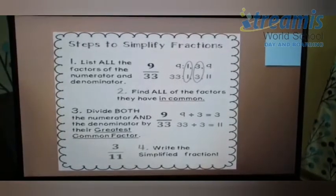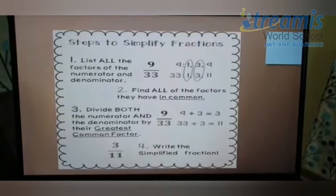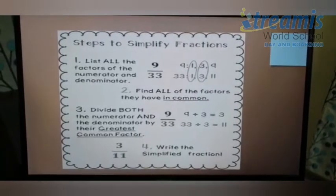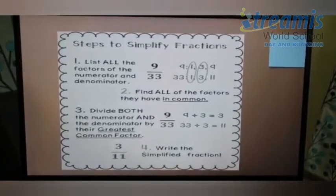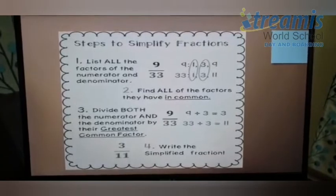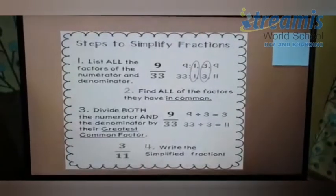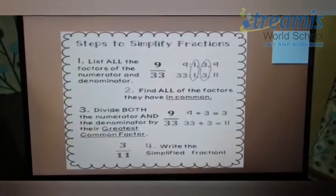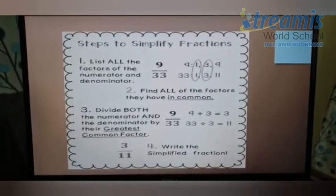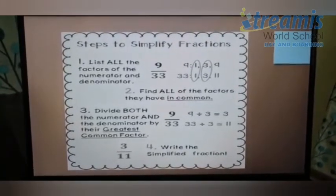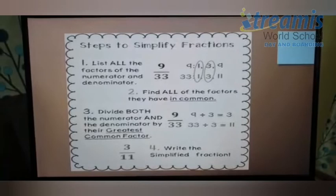So, since out of 1 and 3, the greatest common factor for 9 and 33 is 3. So, I divided 9 and 33 by 3. And yes, I got my answer. It's 3/11. Yes, 3/11 is the simplified fraction.